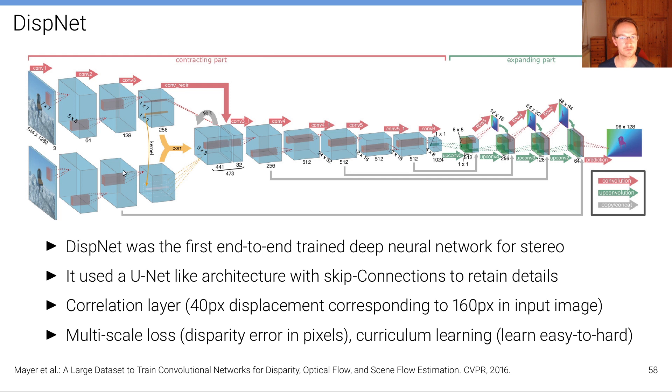We have some convolutions, downsampling, and we have some skip connections. So it's a U-Net architecture, we use skip connections to try to retain fine details, and then we have this up convolution in order to increase resolution again. So we have a contracting and an expanding part.